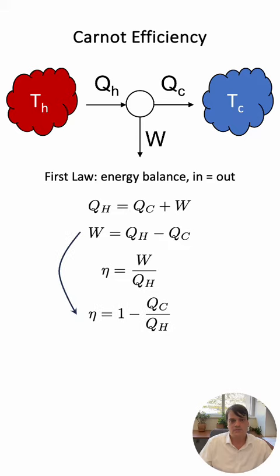We can then insert this definition by dividing through by the Q hot and that gives the efficiency as one minus Q cold divided by Q hot.